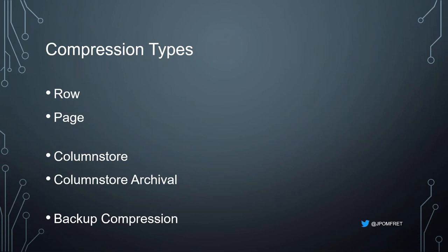Our compression types: we have row and page compression — those are our row store compression technologies, and that's what we'll cover today. We also have columnstore and columnstore archival compression, which came out in SQL Server 2012. We also have backup compression, which also came out in 2008 and compresses your backup on disk. Just making you aware that there are other compression options.